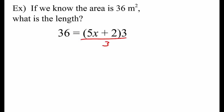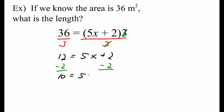3 divided by 3 is 1. But whatever we do on one side of the equation, we have to do on the other side also. 36 divided by 3 equals 12. To undo plus 2, we minus 2 — whatever we do on one side, we do on the other side. To undo 5 times x, we divide by 5. And we get 2 equals x.